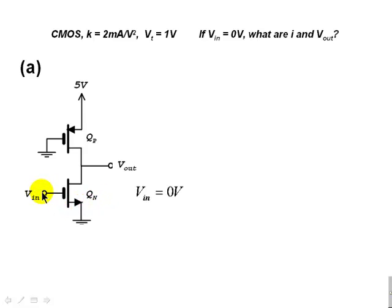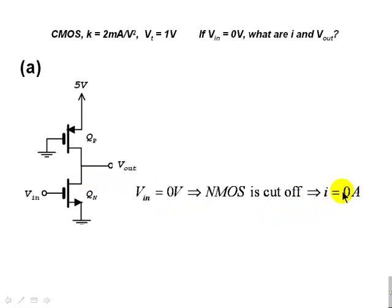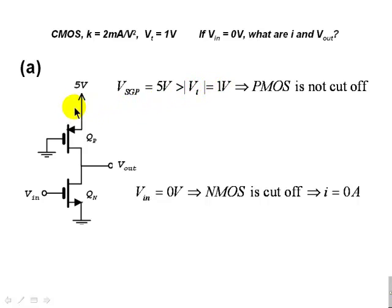For Part A, if the input voltage is 0, that is also the gate-source voltage of the N transistor. If VGS is 0, that transistor is in cut-off mode. That means the drain current of the N transistor is 0, and that is the same drain current of the other transistor. In the P transistor, the source-gate voltage is 5 volts, which is more than VT = 1 volt, so there is a conduction channel — it's not cut-off.